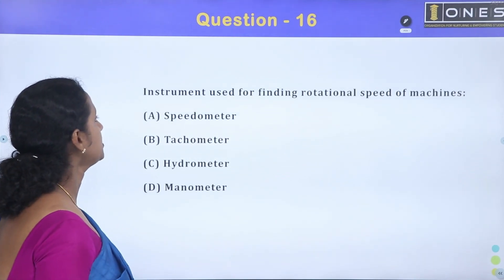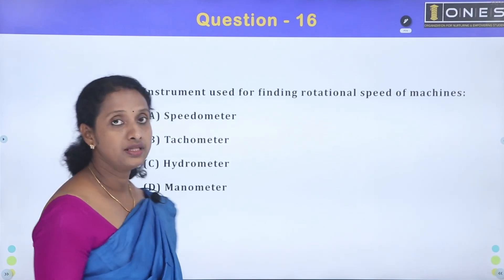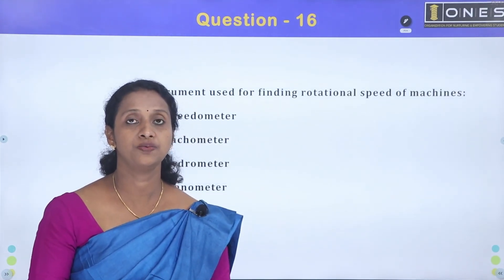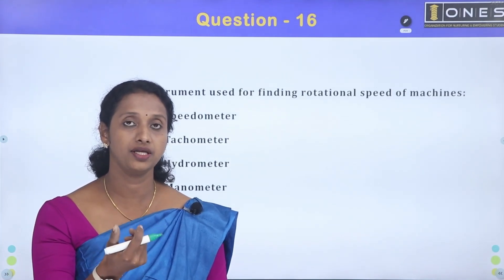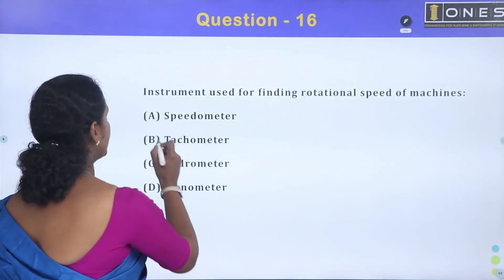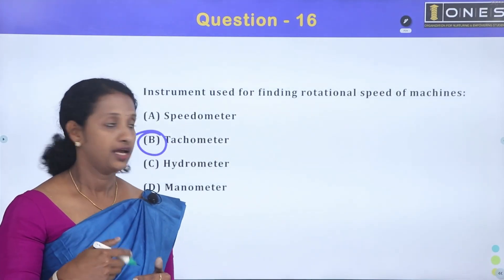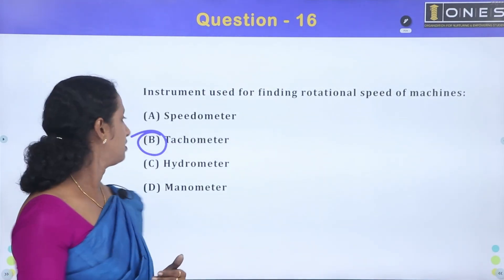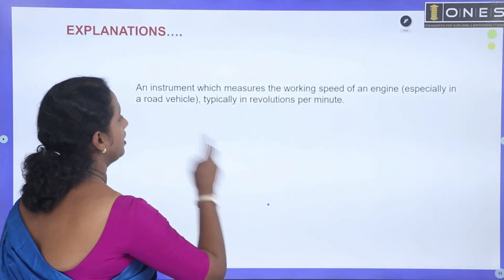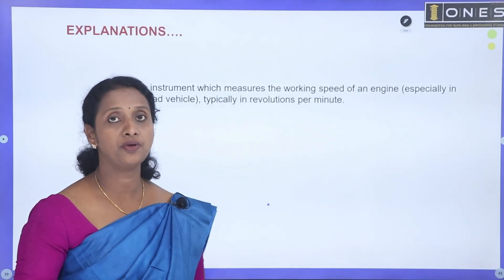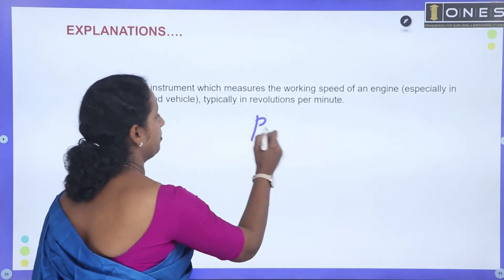Next question: what instrument is used for finding the rotational speed of a machine? What is the speed of the machine or shaft called? A tachometer. This is used in daily practical experiments. Tachometer is option B. It measures revolutions per minute — RPM.